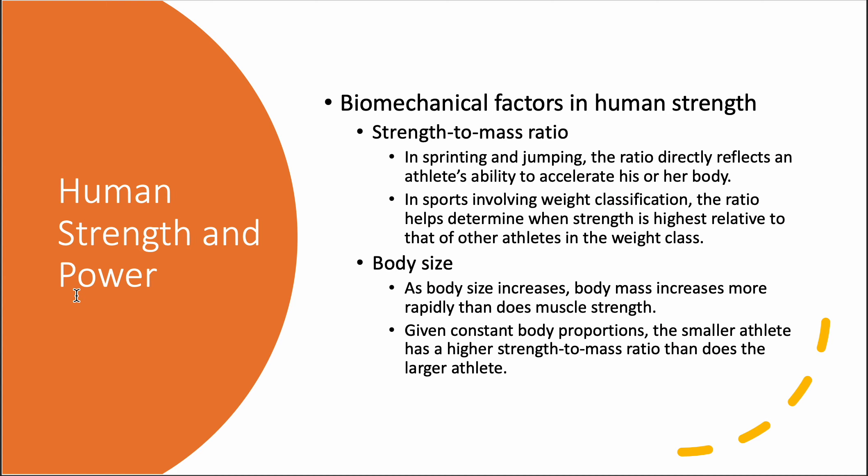Strength-to-mass ratio: typically the heavier you are, the stronger you are overall. But in sprinting and jumping, the ratio directly reflects an athlete's ability to accelerate their body. Sprinters and jumpers are leaner; powerlifters are thicker and move more weight. In terms of relative strength, gymnasts are among the strongest — they are very light and very strong.